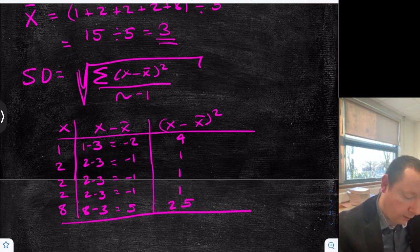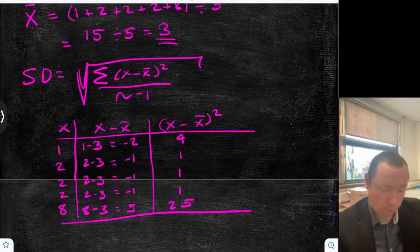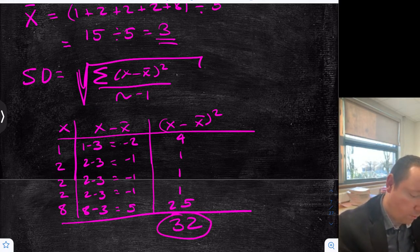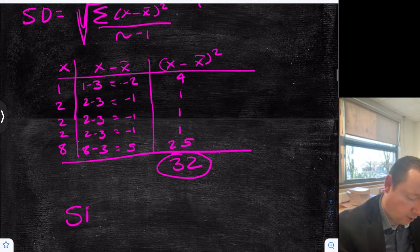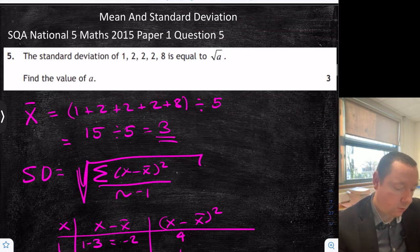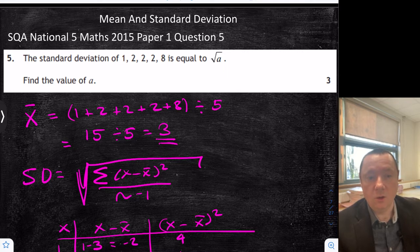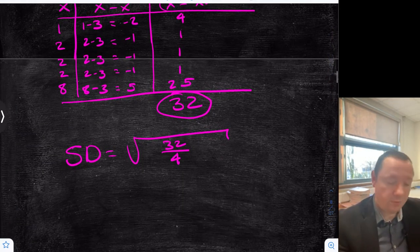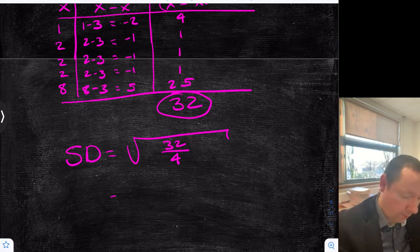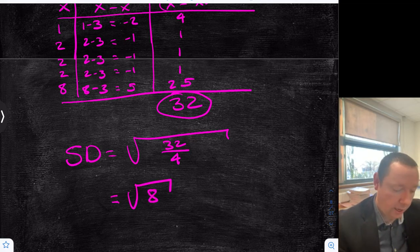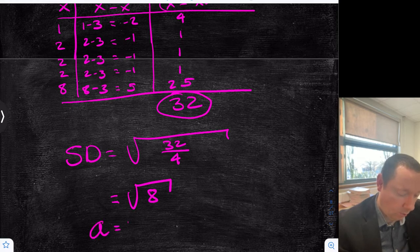We need to add all these up to get a total. So: 25, 26, 27, 28, 29, 30, 31, 32. Our total is 32 — that's our key number, because it's now the top of the formula. Divided by 4, because there were 5 numbers to start with — one less. So our standard deviation equals the square root of 32 over 4. Looking back at the question, it says it equals root a, so we simplify 32 divided by 4: 4 eights are 32, so that's the square root of 8. Therefore a equals 8.